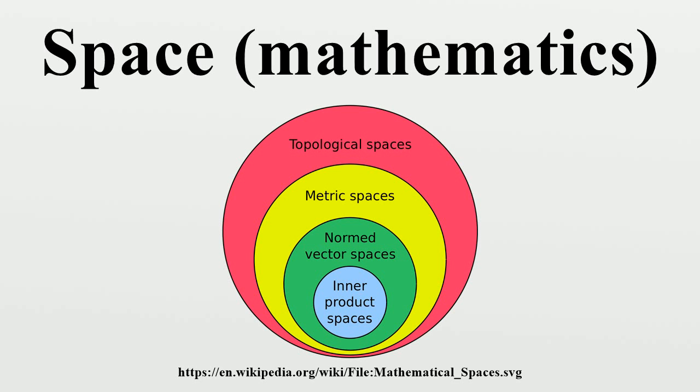A space consists now of selected mathematical objects treated as points, and selected relationships between these points. It shows that spaces are just mathematical structures. One may expect that the structures called spaces are more geometric than others, but this is not always true. For example, a differentiable manifold is much more geometric than a measurable space, but no one calls it differentiable space.